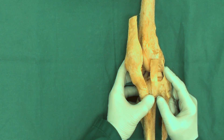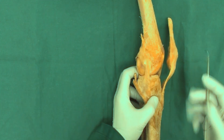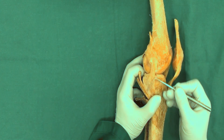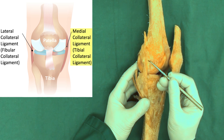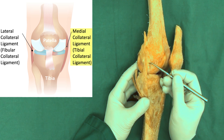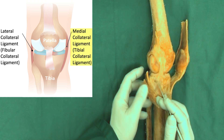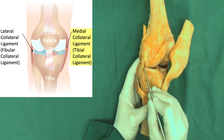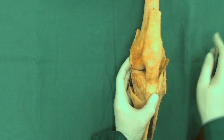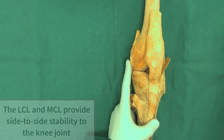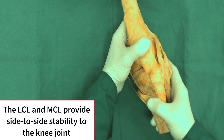On the medial side we have the medial collateral ligament, also called the tibial collateral ligament. It stretches between the medial femoral epicondyle of the femur to the upper medial tibia. This ligament does attach to the medial meniscus. These are the collateral ligaments that provide side-to-side stability to the knee joint.